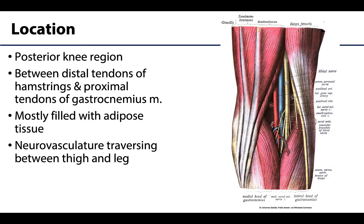We are looking at a posterior view of the knee region. When you look at a living individual, it's that slight diamond-like depression in the back of the knee that is covering the popliteal fossa. Try putting your hand behind your knee right now, in that posterior portion of your knee — that is the popliteal fossa.